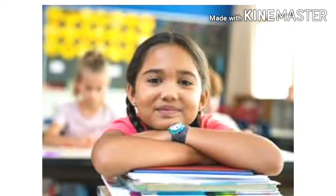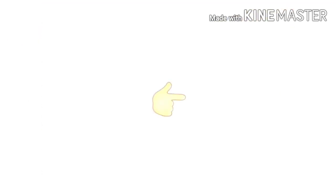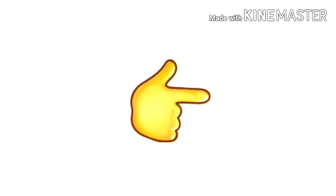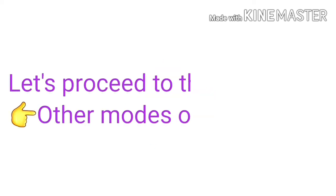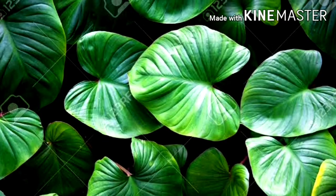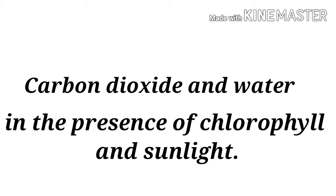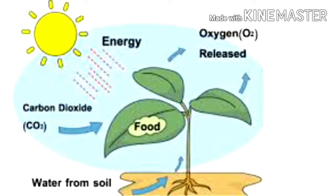I know these questions are too easy to answer for you. So let's jump to the next topic, which is other modes of nutrition in plants. We have already learned that green plants can make their own food from carbon dioxide and water in the presence of chlorophyll and sunlight. So green plants are autotrophs.